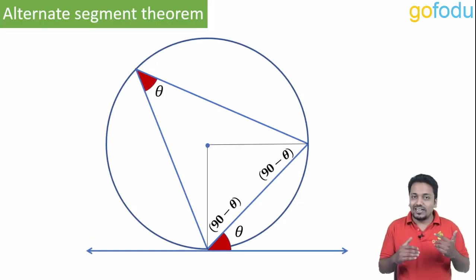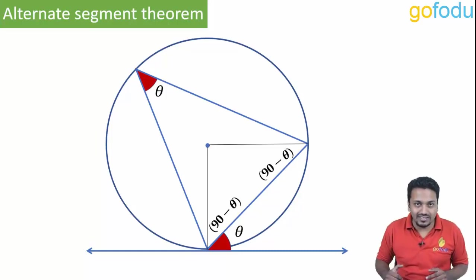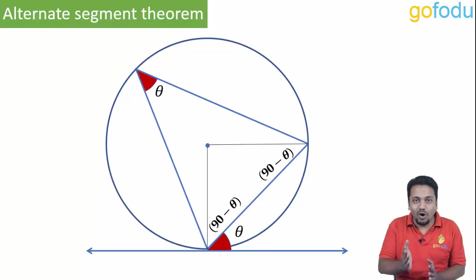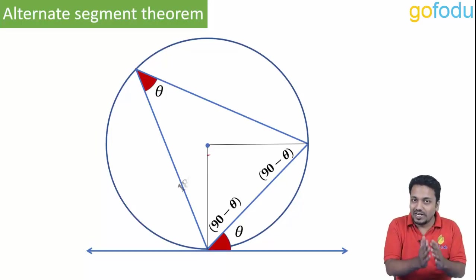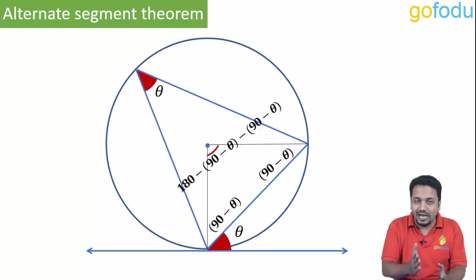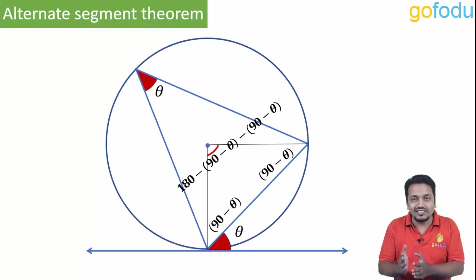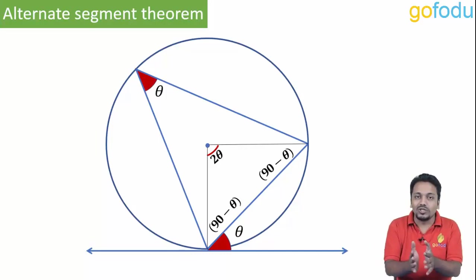Now in a triangle, the angle sum is 180 degrees. So the angle subtended by the chord at the center will be 180 minus (90 minus theta) minus (90 minus theta), which is 2 theta.